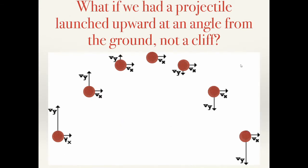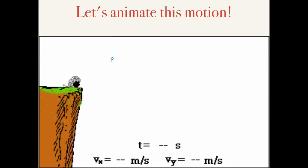If you came up with something like this, you're starting to understand the material. The vx components should all be constant, pointing to the right. The vertical velocities should all be different: they start by pointing upward and large, then decrease in size as the ball rises. At the very top, there is no vertical velocity because the ball is turning around vertically. Then as the ball falls, vy grows in size again. This is the result of a constant downward acceleration equal to g.